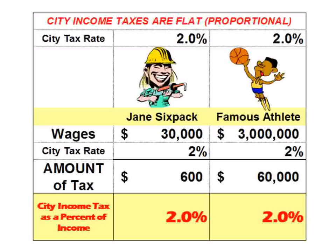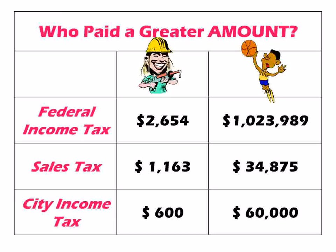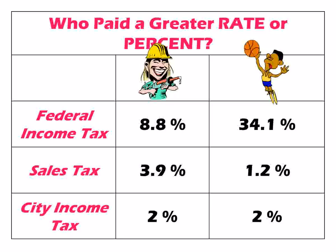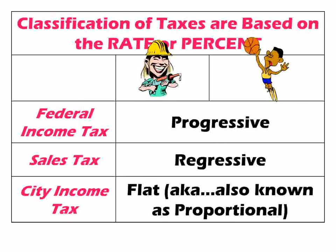Then I move on to city income taxes. He pays a much greater amount, but both pay the same rate — the same percent. I use mathematical examples then summarize. He paid a greater dollar amount in every case, but the rates tell the real story: when the person with higher income pays a greater rate, that's progressive. When the person with greater income pays a lower rate, that's regressive. If all taxpayers pay the same rate, it's a flat tax. Federal income tax — progressive. Sales taxes below the surface — regressive. City income taxes — flat.